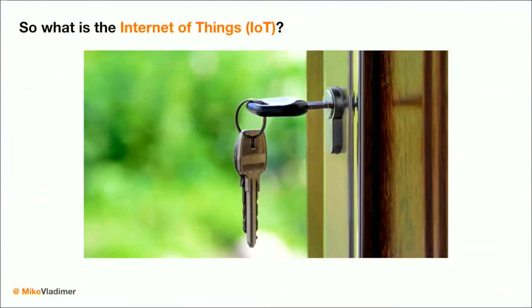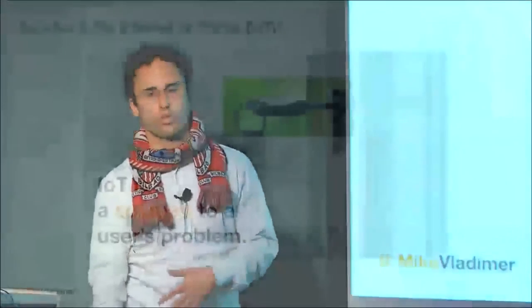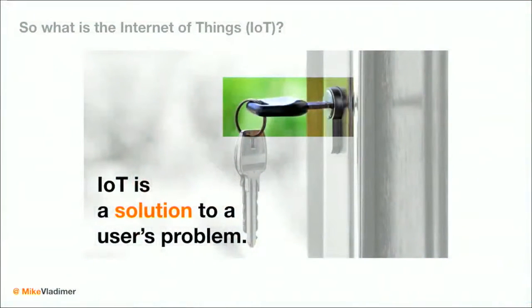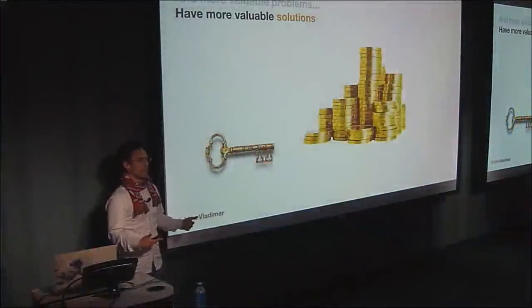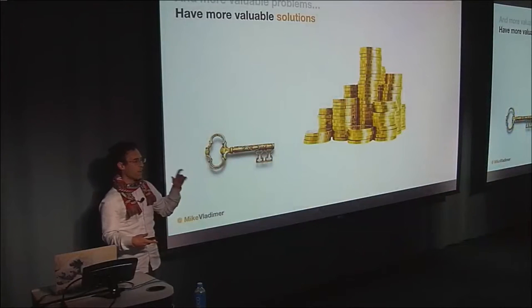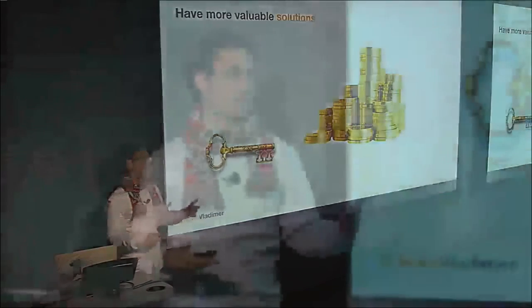First and foremost, what is the Internet of Things? It's really hard to get a concise, clear, easy definition. My first pass is that IoT is a solution to a user's problem. If a user is trying to get through a door, IoT is like that key that unlocks the door — a tool to let that user accomplish their goal, to end the pain. More valuable problems have more valuable solutions. One consistent, repeatable way that IoT can be disappointing is when it's a solution for a problem that's not really compelling or valuable. If you're working on a problem that's not high value, there's no way your solution is going to be high value.